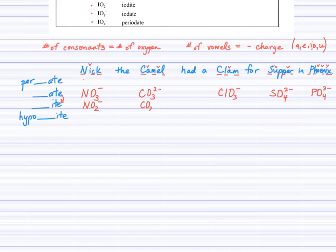Carbonite, CO2 two negative. That one's not even on your list, but just showing you how that works. Chlorite, ClO2 negative. Sulfite, SO3 two negative. Phosphite, PO3 three negative.